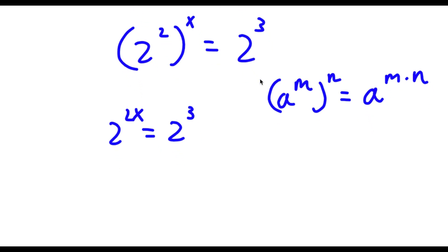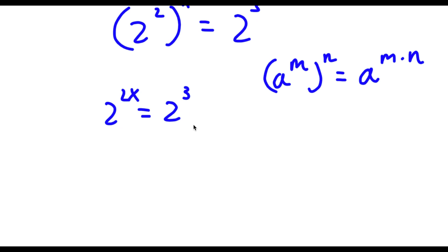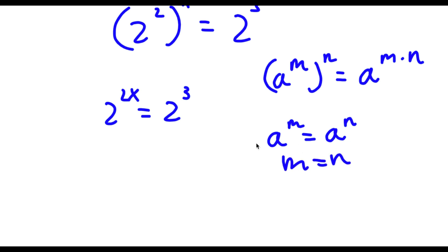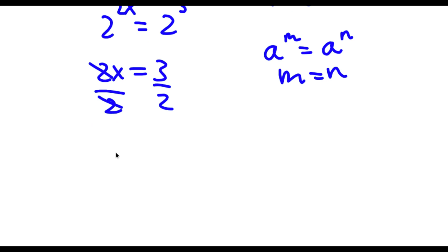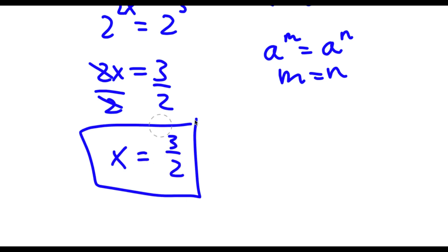Now if I have something in the form a to the power of m is equal to a to the power of n, this means that m is equal to n. So in this case 2x is equal to 3. To solve this I'm simply going to divide both sides by 2. These two cancel out and I'm left with x is equal to 3 over 2. So this is my answer.